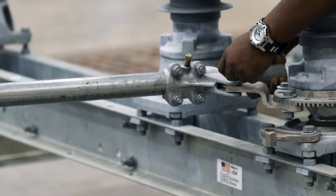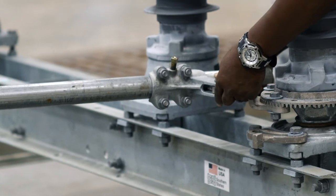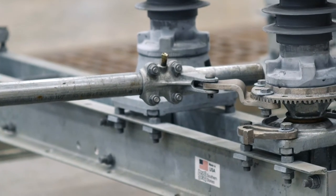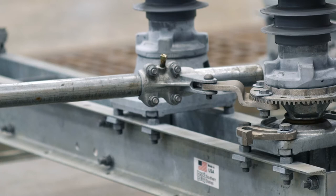Connect the reach rod between the outboard bearing and auxiliary arm of the driven phase and secure with clevis bolts without fully tightening.